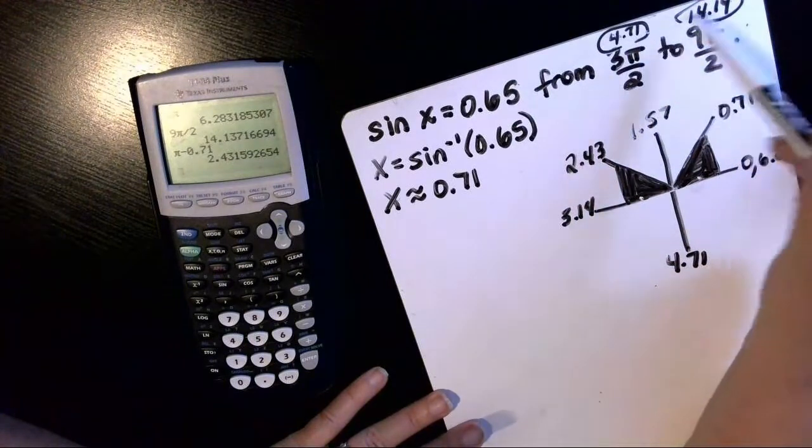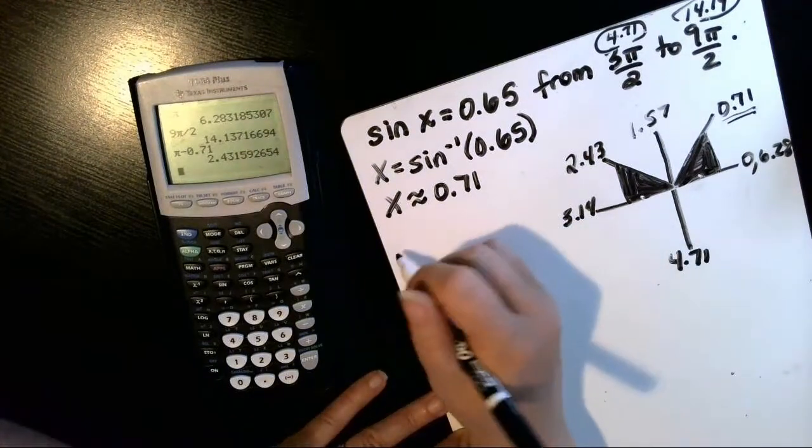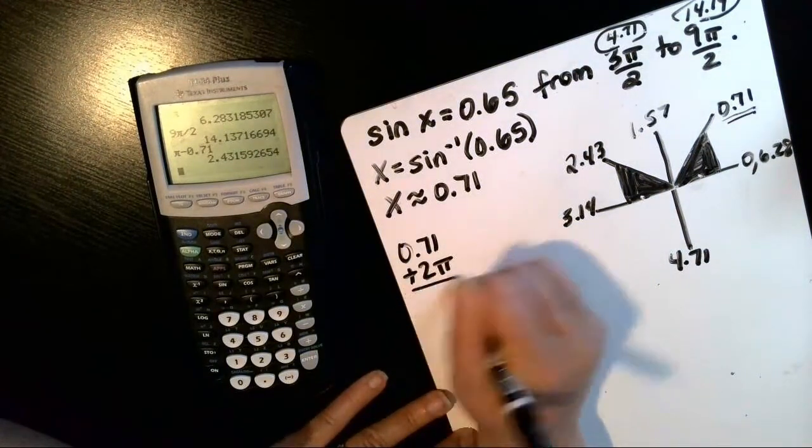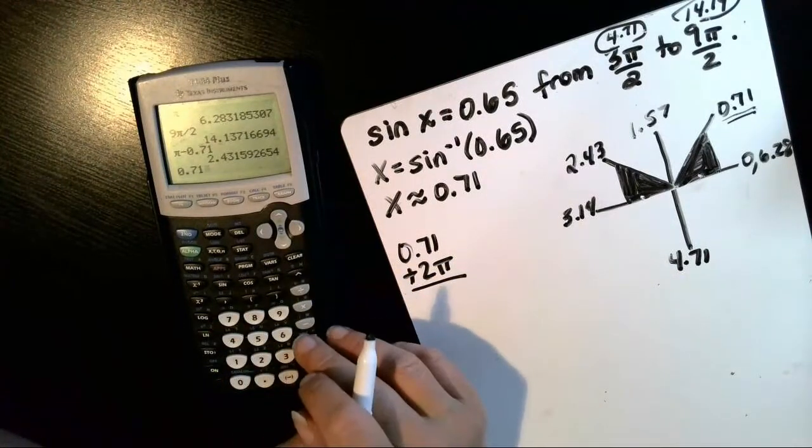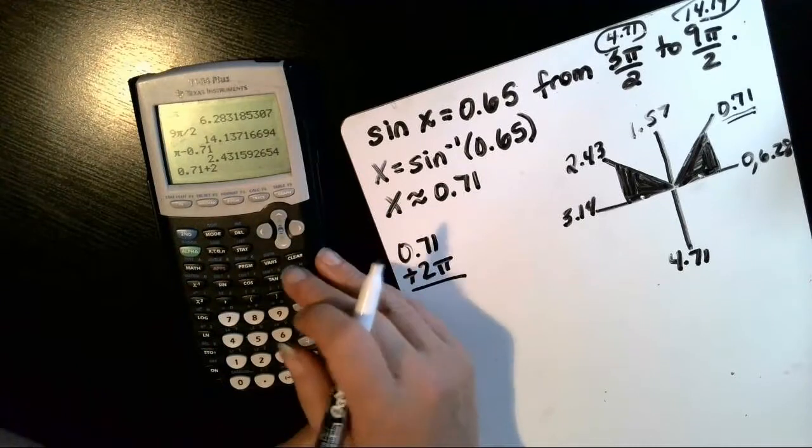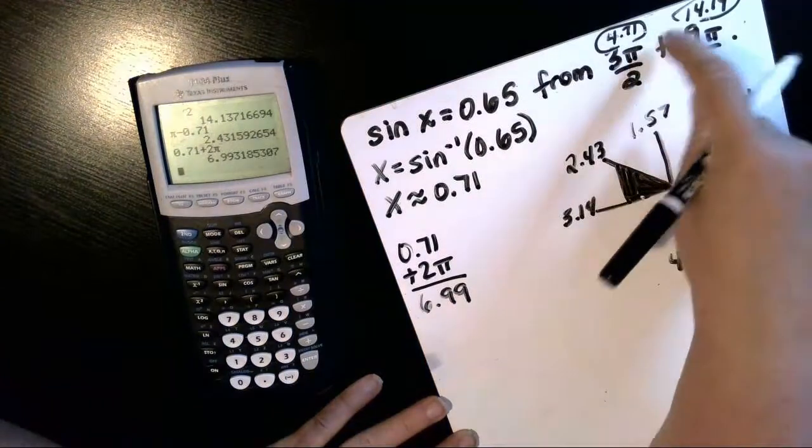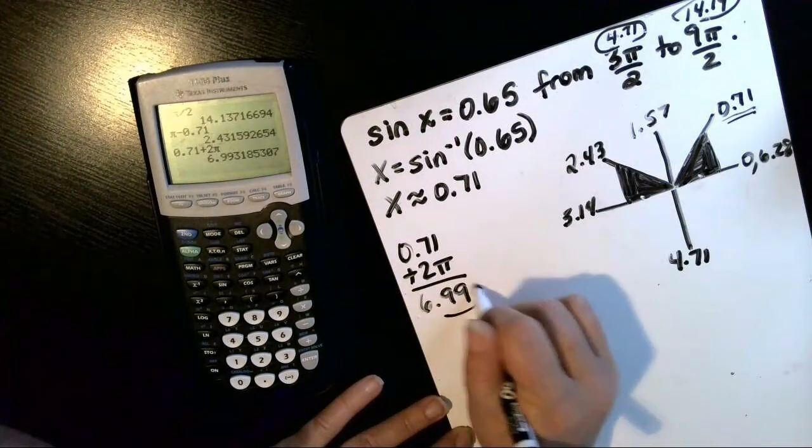So to get within this range, we're going to start with our quadrant 1 answer and add 2 pi. So 0.71 plus 2 pi will get us a coterminal angle. So that's going to be 6.99. And that is in the range, 4.71 to 14.14. So that's an answer.